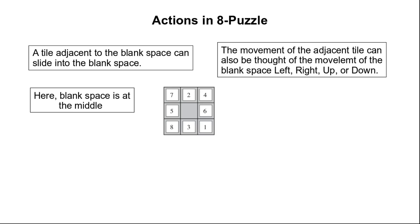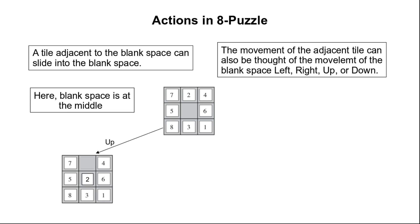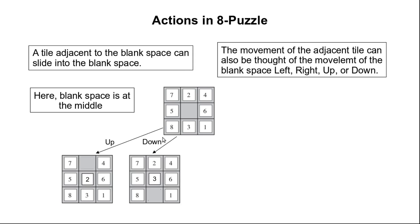Consider this configuration where the blank space is at the middle. We can move the blank space upward, and if we move the blank space upward this would be the new configuration of the board — the blank space moved up, so tile two came down to fill the blank space. The blank space may also be moved downward, giving a new configuration of the board.